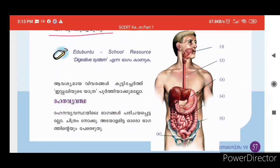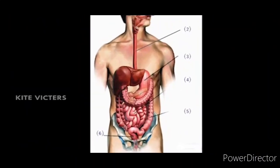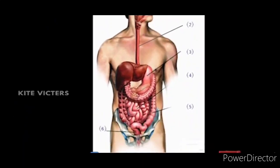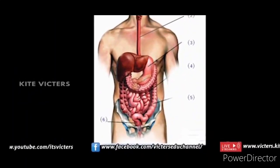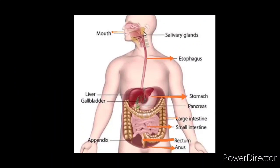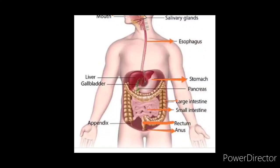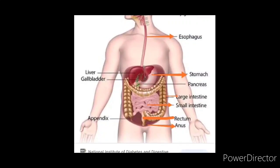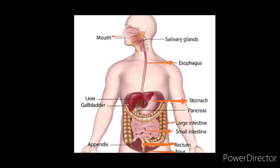This is the digestive system. You can label it as a digestive system. This is the esophagus, the third one is the stomach, then large intestine, small intestine, rectum, and anus.